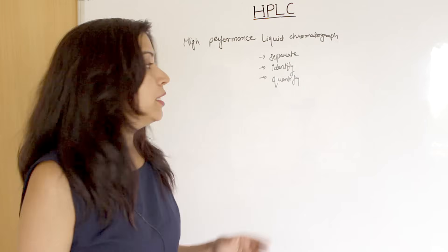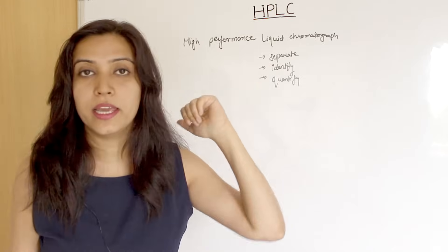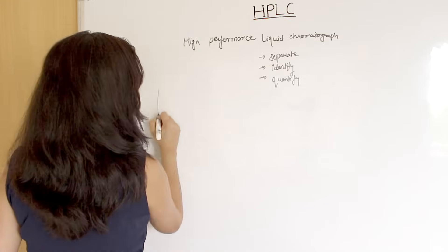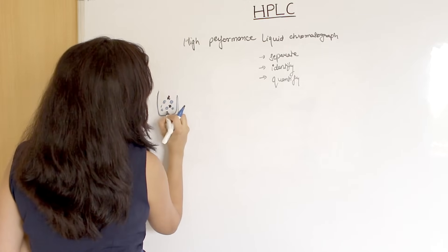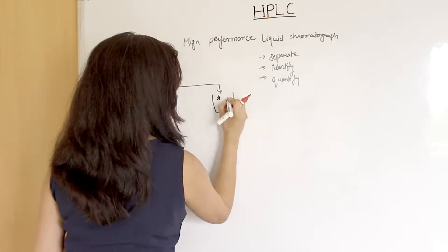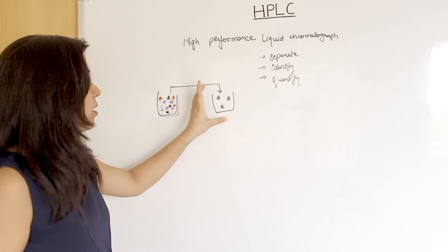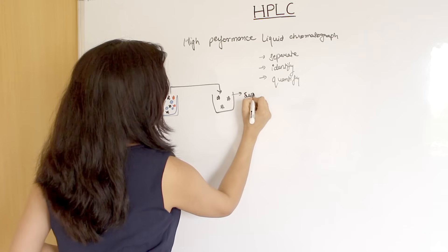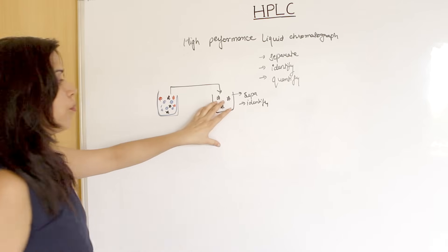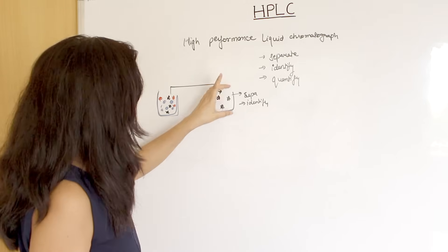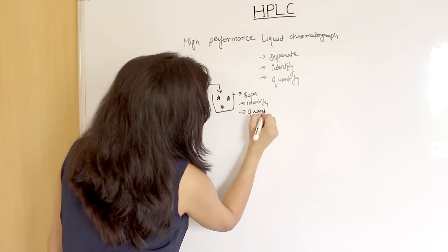This technique is used to separate, identify, and quantify. If there is a mixture of components present, different types of components are present. To separate one component and identify it — for example, if I have a protein component, I have just separated and identified that it is a protein molecule.